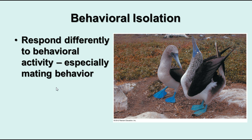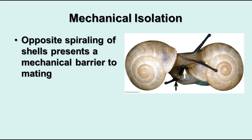Behavioral isolation is when species respond differently to behavioral activity, especially mating behavior. Blue-footed boobies have a very specific mating behavior, and if there's a difference in that behavior, one mate won't accept the other because they don't perform the prescribed dance. That separates them and prevents interbreeding, which can be due to slight differences in geographic location or other factors. Mechanical isolation also occurs — two snails whose shells spiral in opposite directions present a mechanical barrier to mating: their sex organs cannot come in contact, so they can't exchange gametes. Many insects have very specific mating parts that can only fit a member of their own species.